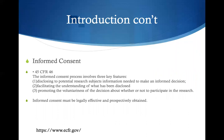The Code of Federal Regulations also describes informed consent as a process with three features: disclosing information to potential research subjects so they're making an informed decision; facilitating the understanding of what has been disclosed; and promoting the voluntariness of the decision — whether or not they can participate in the research. Essentially, you give all the information a patient or subject needs to know, ensure they understand every single aspect of the trial or procedure, and that they understand their participation is voluntary, not under duress.